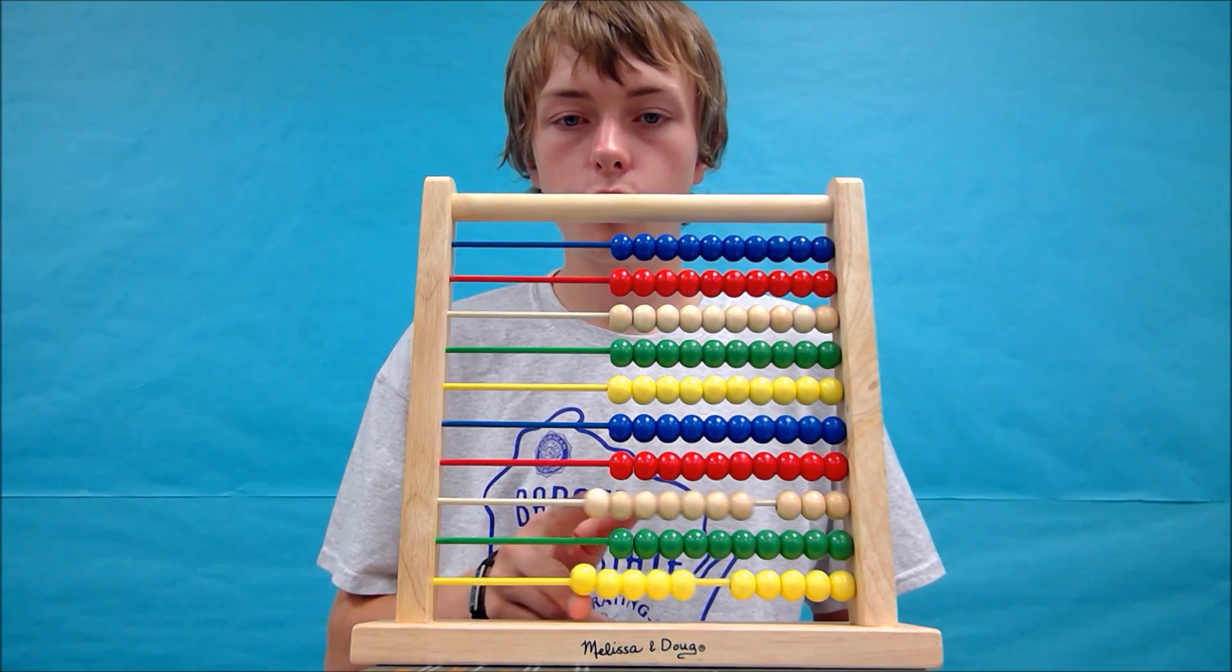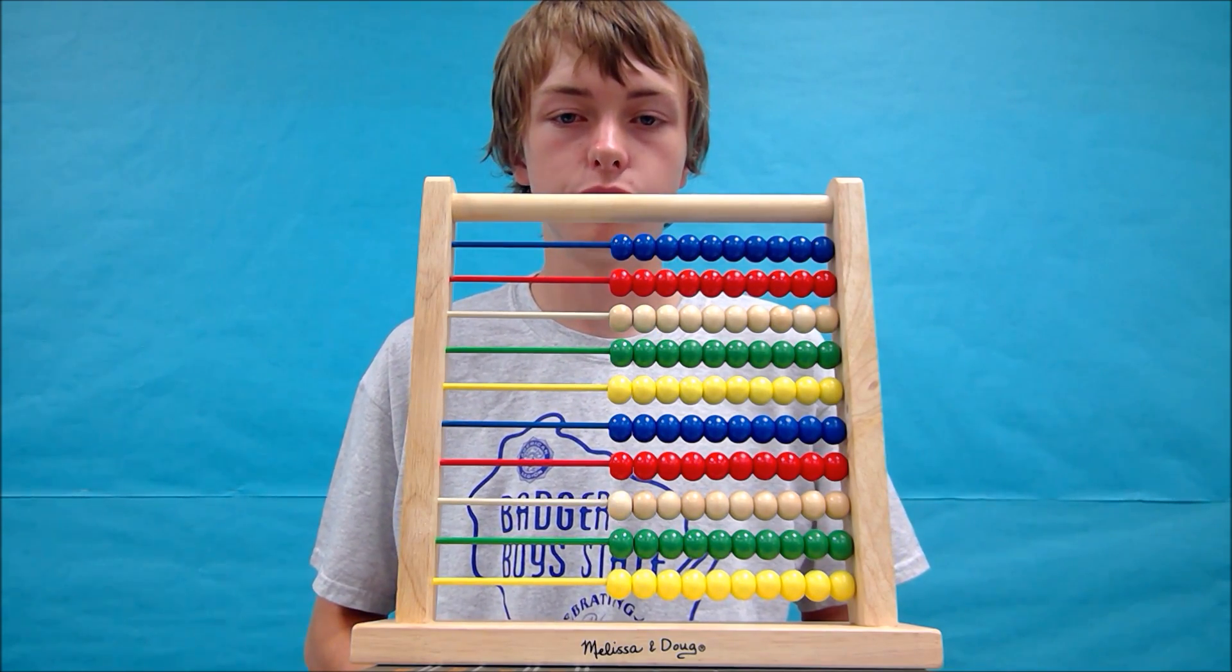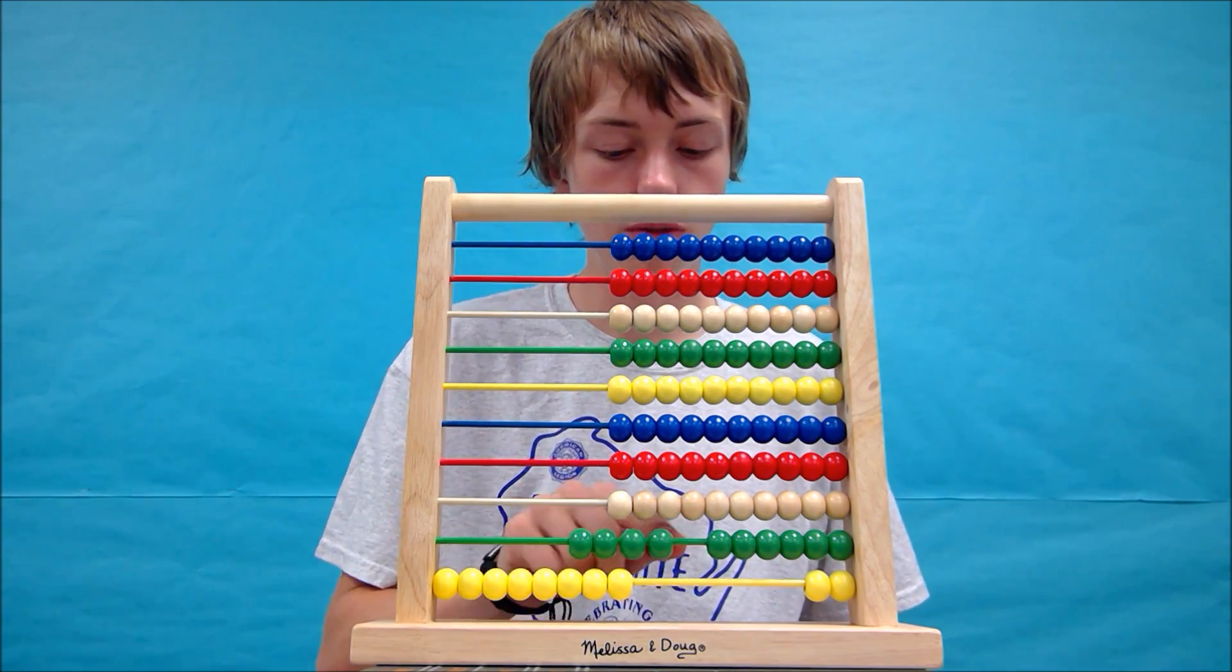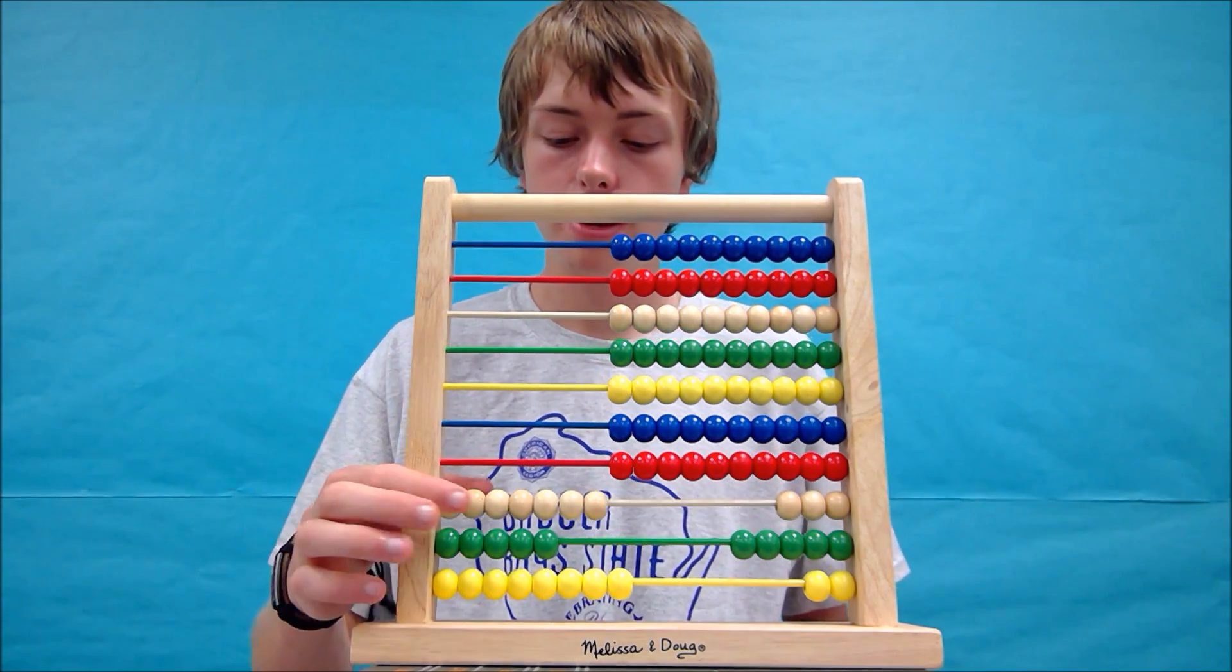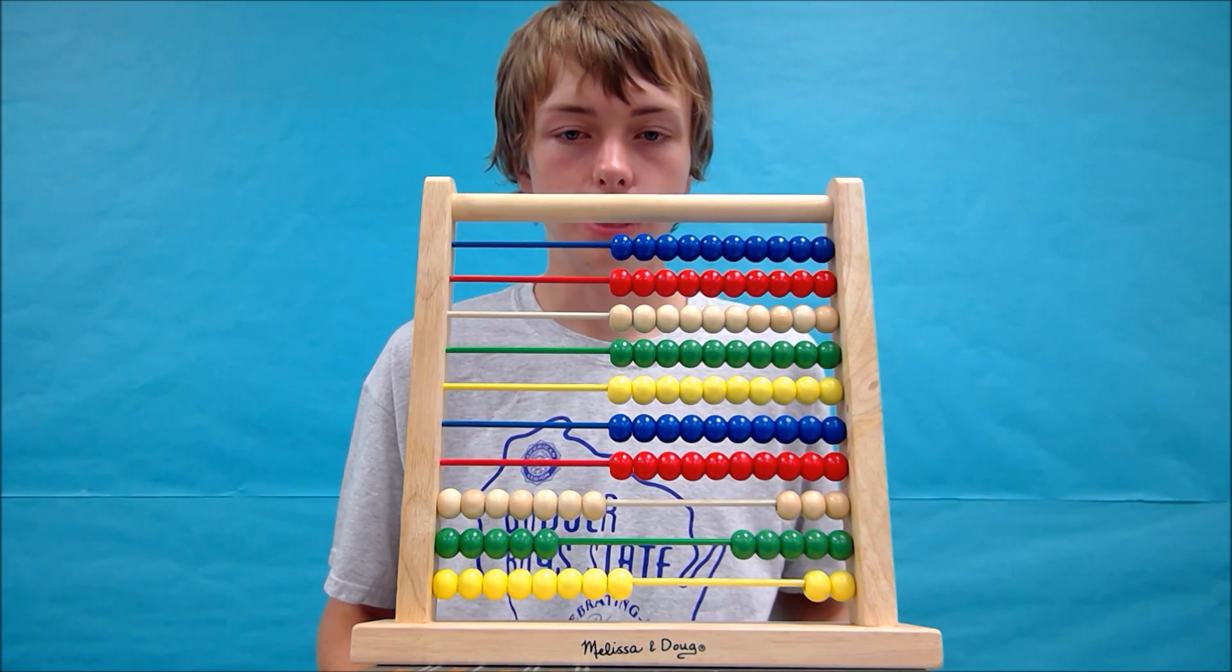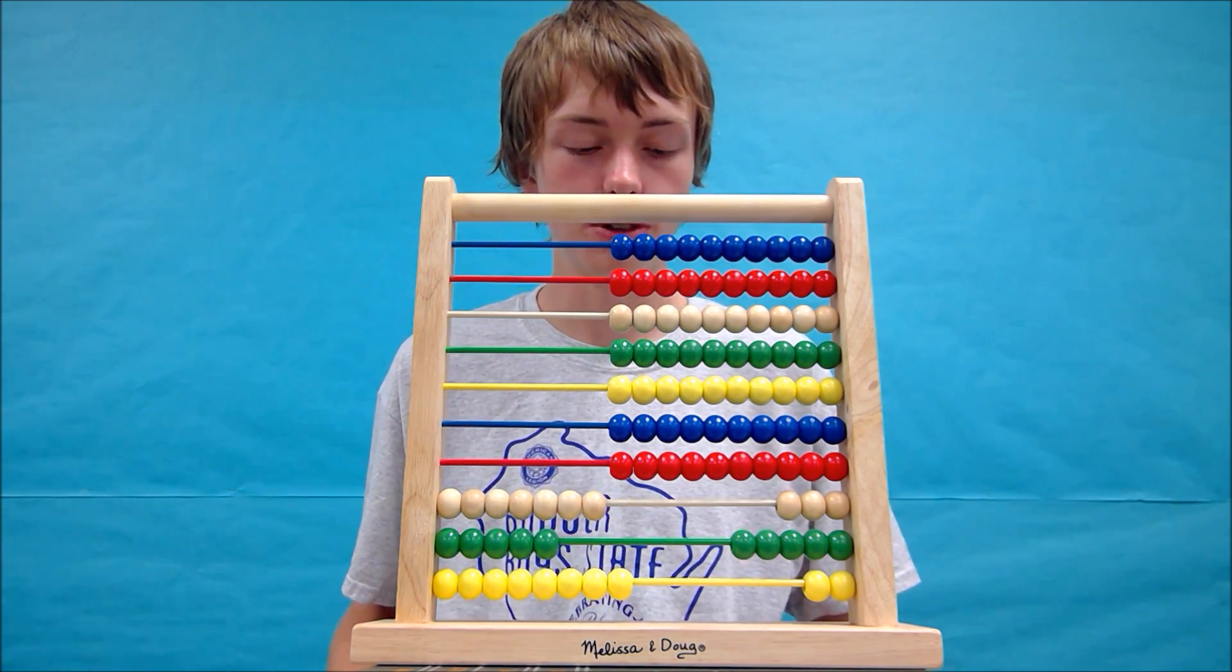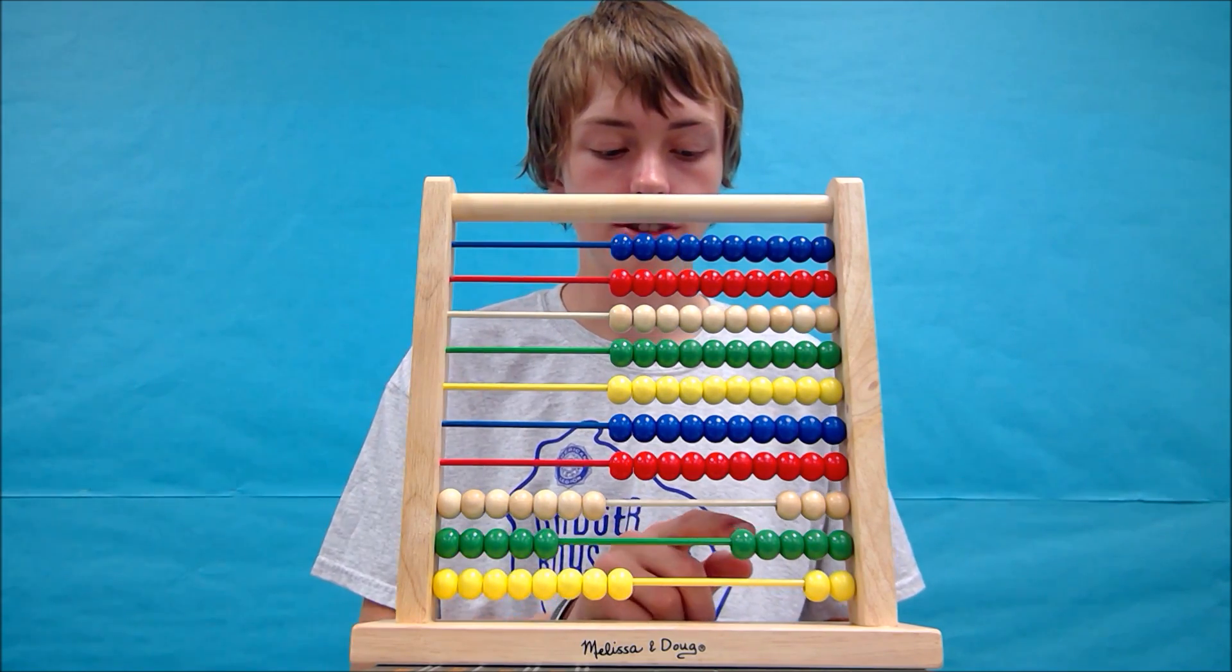All right, let's try one more tricky example. We're going to try 758 plus 460. So let's start by forming the first number 758. 2, 4, 6, 8, 2, 4, 5, 2, 4, 6, 7. So there we have 758. Now we have to add 460. Since there is a 0 in the ones place, we do not have to move any beads, which is really nice because then there's less numbers to remember.